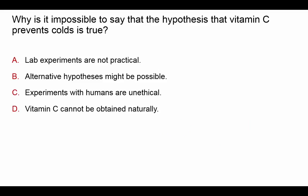Quick question: why is it impossible to say that the hypothesis 'vitamin C prevents colds' is proven true? A: lab experiments are not practical. B: alternative hypotheses might be possible. C: experiments with humans are unethical. D: vitamin C cannot be obtained naturally. The answer is B — because alternate hypotheses might be possible, the hypothesis may be supported but not necessarily proven to be true.